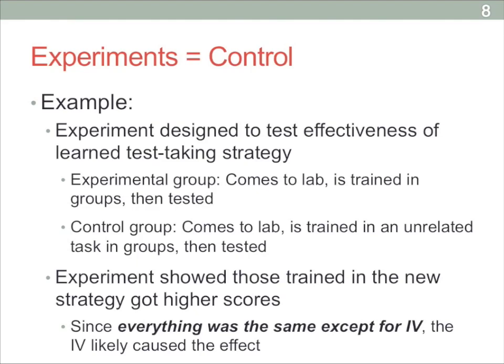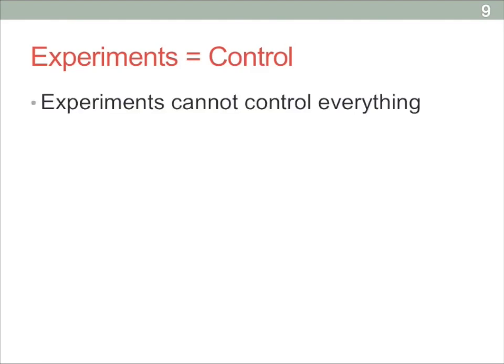Of course, no one experiment is perfect — there can be unforeseen confounds — but for the most part, this is how experiments theoretically work to yield cause-and-effect results. In experiments, you can't control for everything. The biggest thing you can't control for are the different characteristics that participants are bringing in to the equation.